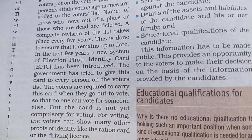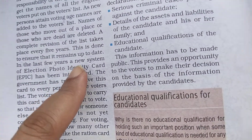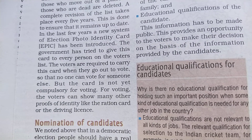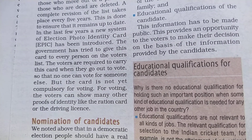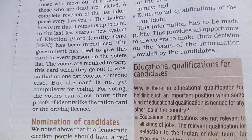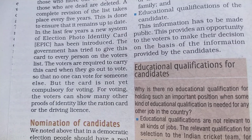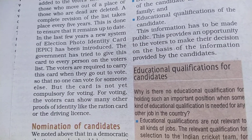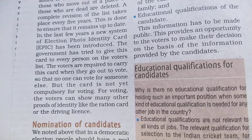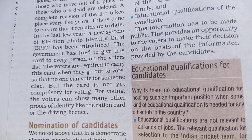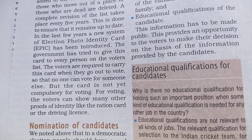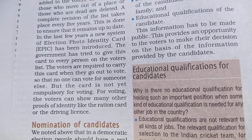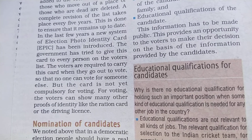After the list is prepared, we have the Election Photo Identity Card, that is, the EPIC card — the voter ID card. Every person must carry their voter ID, and their name must be mentioned in the voters list. Earlier the voter ID card was compulsory, but now we can also use Aadhaar card, driving license, or ration card as ID proof. We must have some ID proof with us to cast a vote for our representatives.